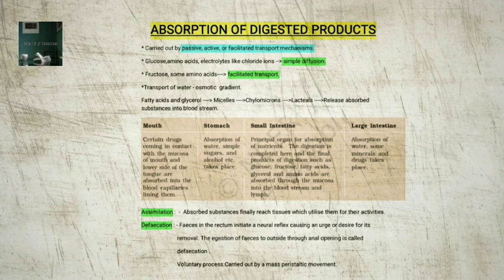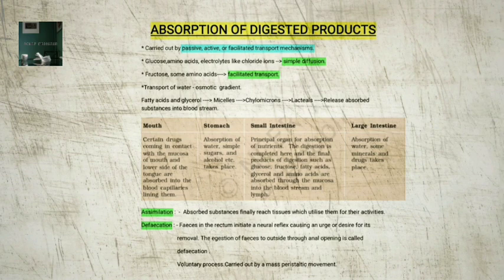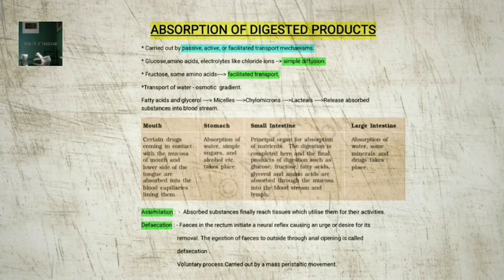Absorption takes place in different parts of the alimentary canal: 1. Mouth — certain drugs coming in contact with mucosa of the mouth and lower side of the tongue are absorbed into the blood capillaries lining them. 2. Stomach — absorption of water, simple sugars, and alcohol takes place. 3. Small intestine — the principal organ for absorption of nutrients; digestion is completed here and the final products such as glucose, fructose, fatty acids, glycerol, and amino acids are absorbed through the mucosa into the bloodstream and the lymph. 4. Large intestine — absorption of water, some minerals, and drugs takes place.